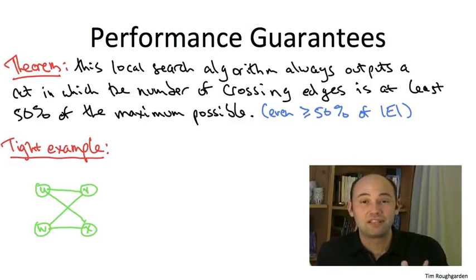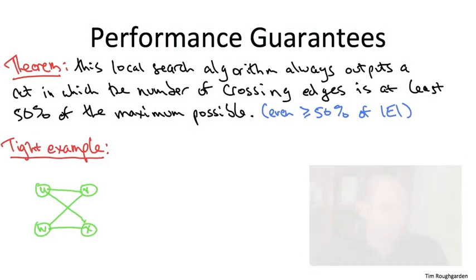Indeed, here's an example which itself is even a bipartite graph, so it's a tractable special case of maximum cut. But even on bipartite graphs, the local search heuristic might return to you a maximum cut which has merely 50% of the edges of a globally optimal maximum cut. The example is drawn here in green. There's just four vertices and four edges. As I said, it is a bipartite graph, so the best cut is just to put U and W in one group and V and X in the other group. That cuts all four of the edges.